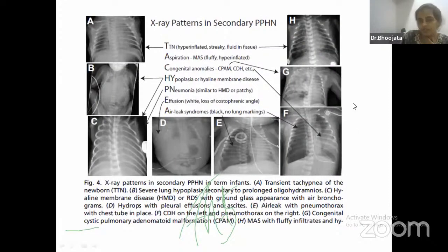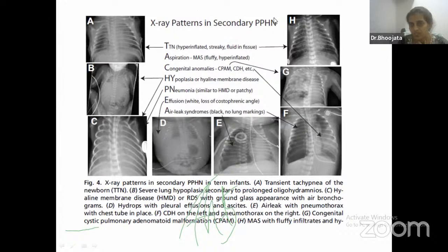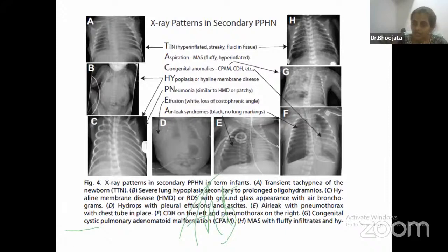All these conditions — HMD, meconium aspiration, CDH, congenital pneumonia — will predispose to secondary PPHN where lungs are the culprit. For these, proper lung recruitment is key. Open up the alveoli, give adequate PEEP and PIP. If maintaining on conventional ventilation, good. Otherwise, open lungs with HFO and then give surfactant, because all these disease conditions have secondary surfactant deficiency. X-ray terminology: grainy appearance means RDS or pneumonia; patchy means pneumonia; fluffy means meconium aspiration.